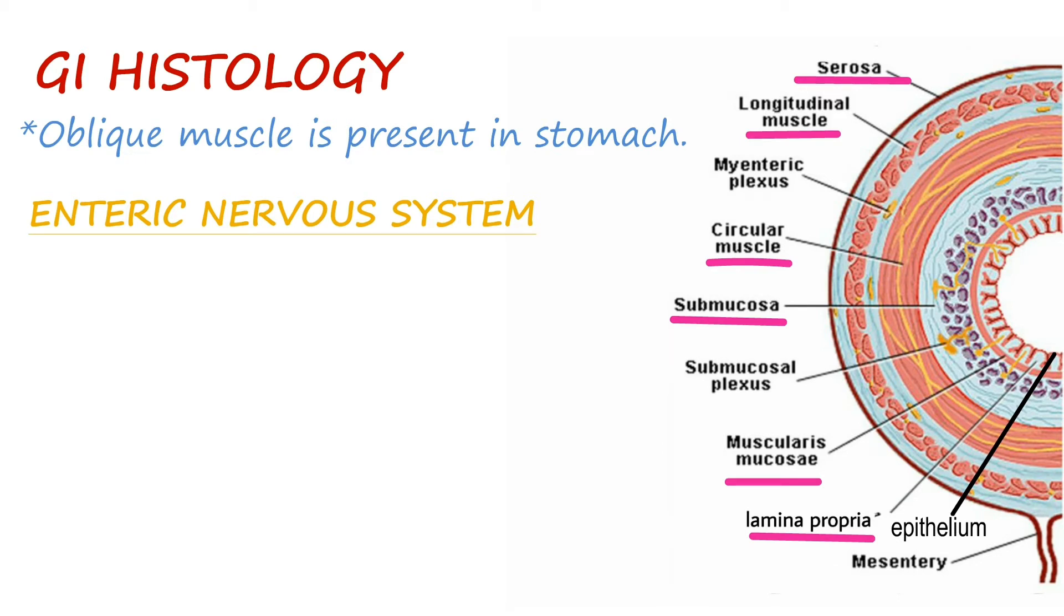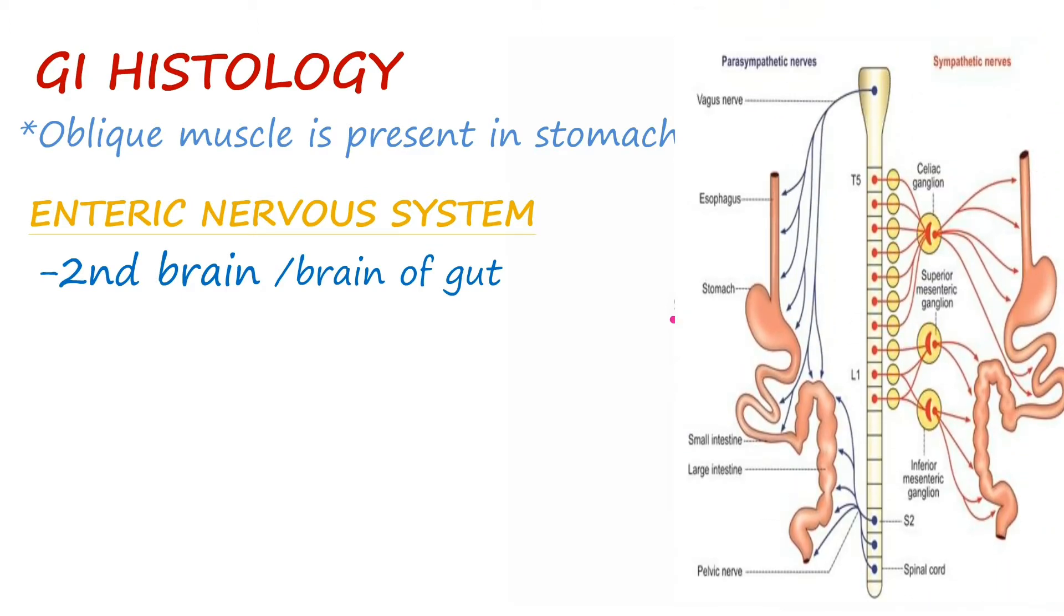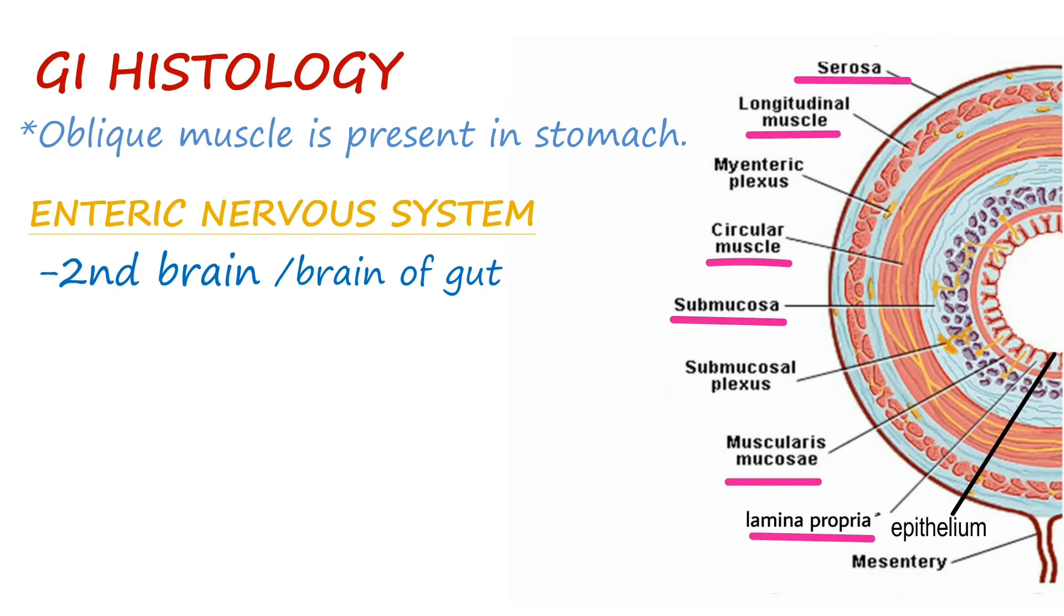Hence it is known as the second brain or the brain of the gut. The enteric nervous system is influenced by sympathetic and parasympathetic nervous system, but it can work independently as well. The enteric nervous system consists of